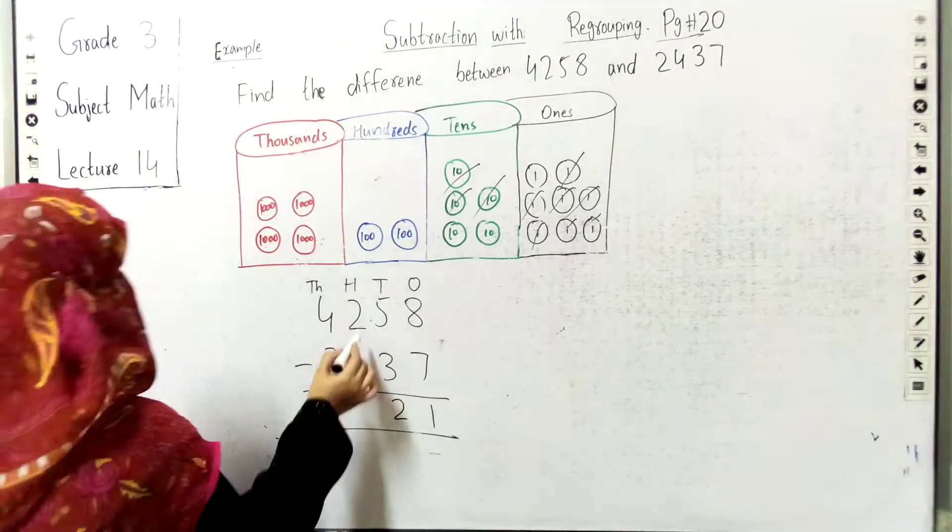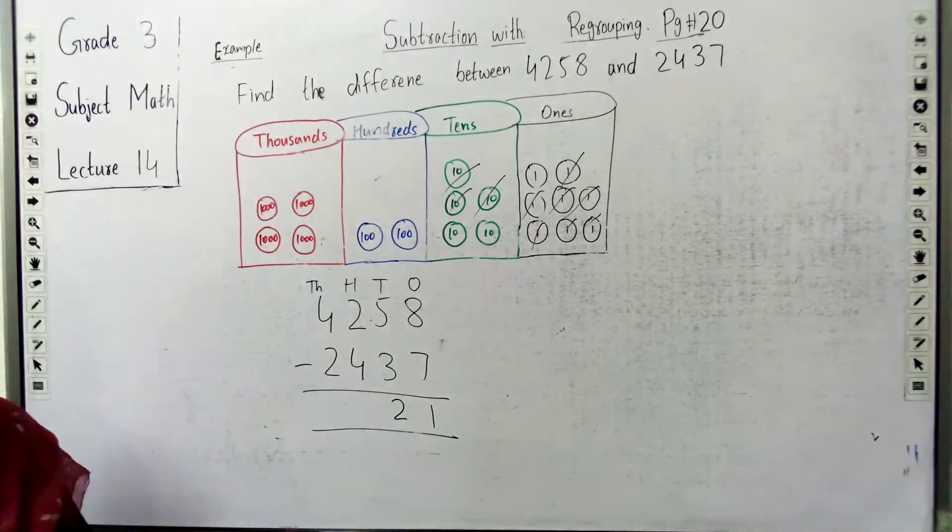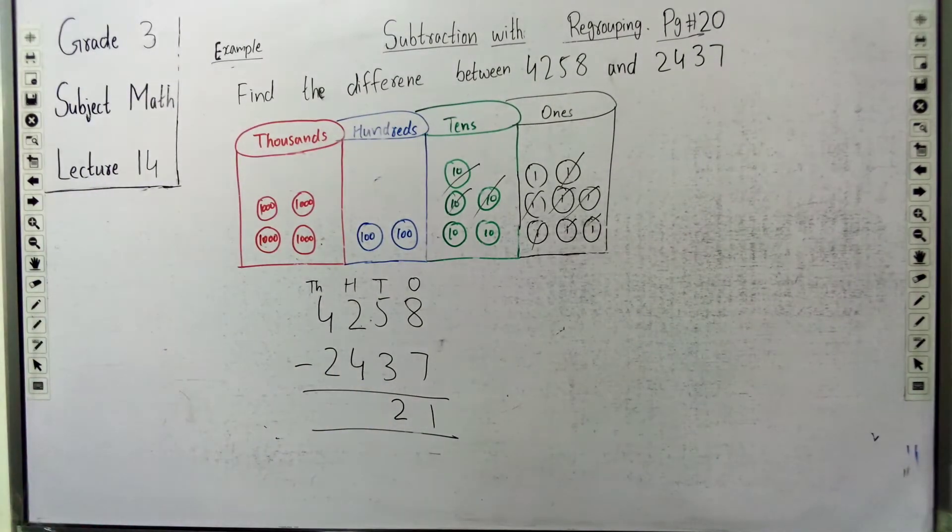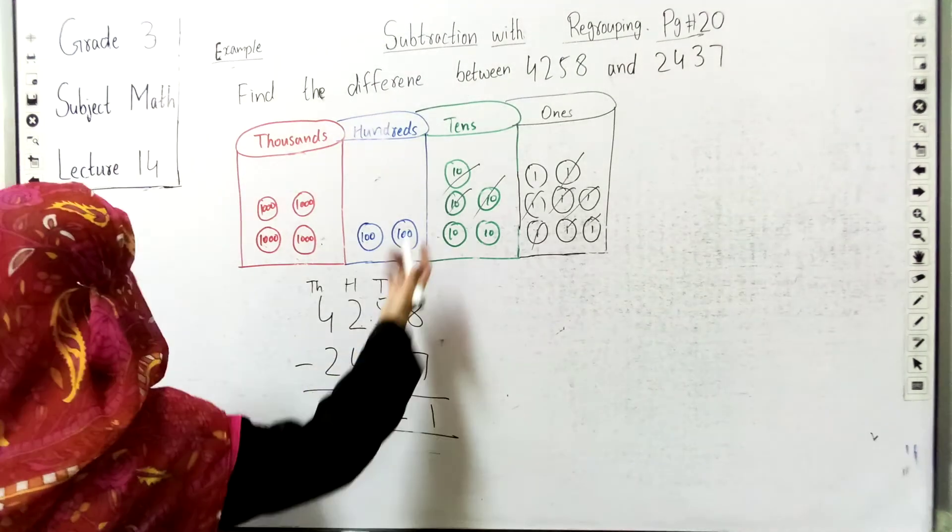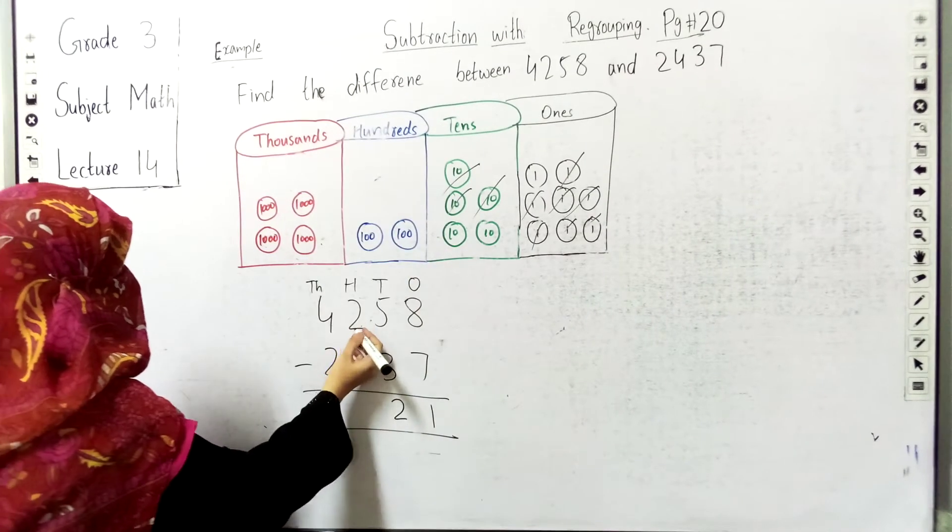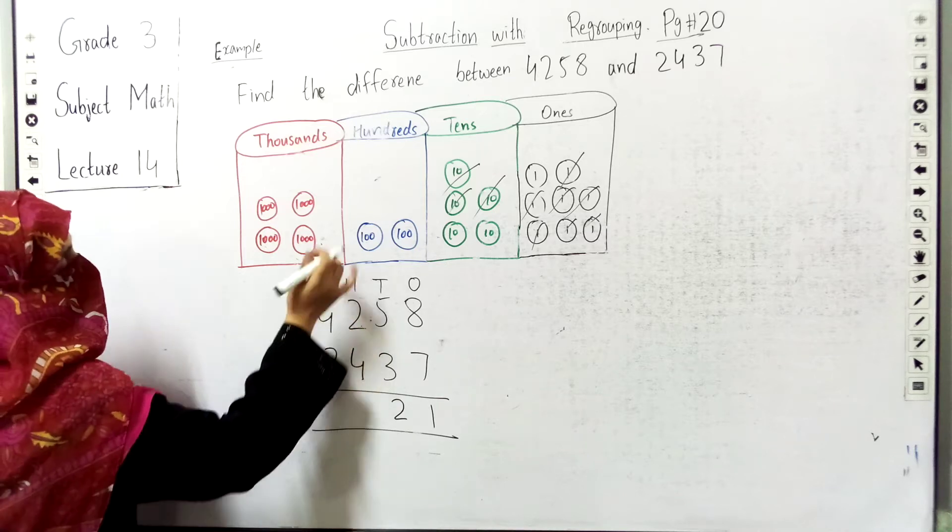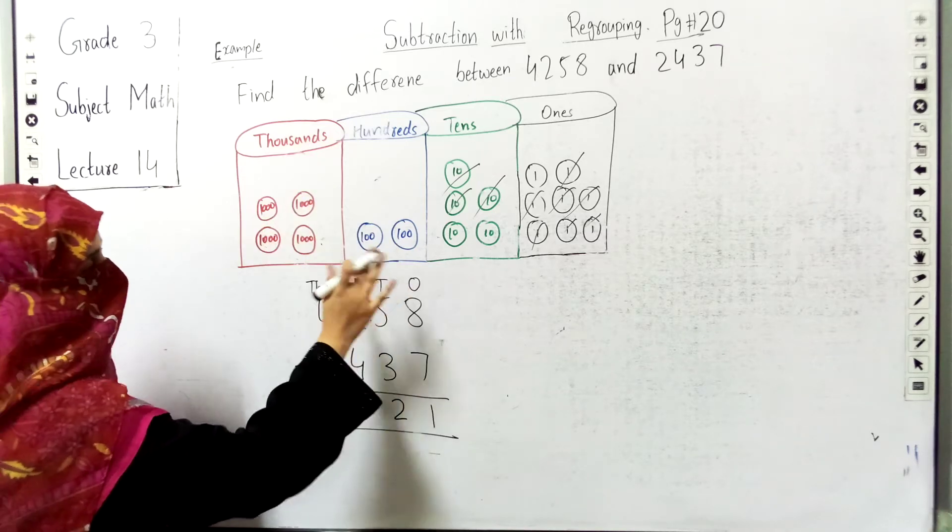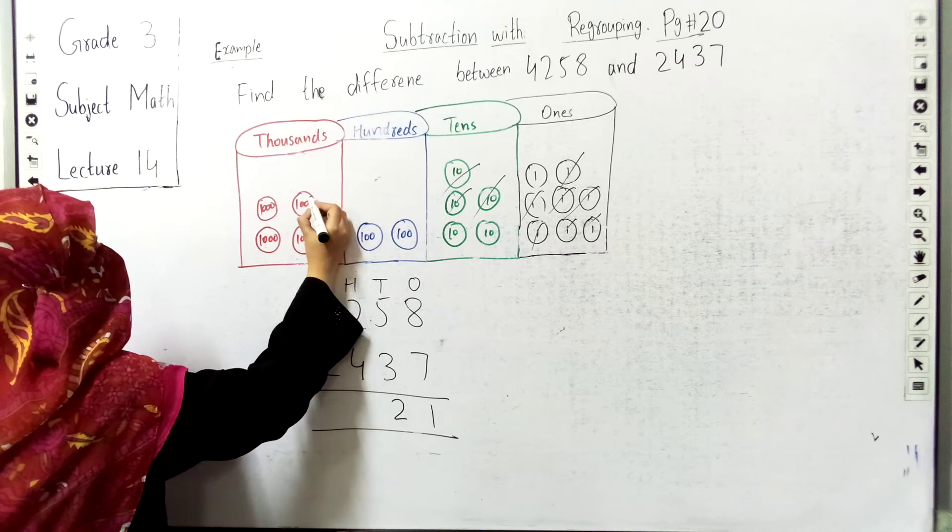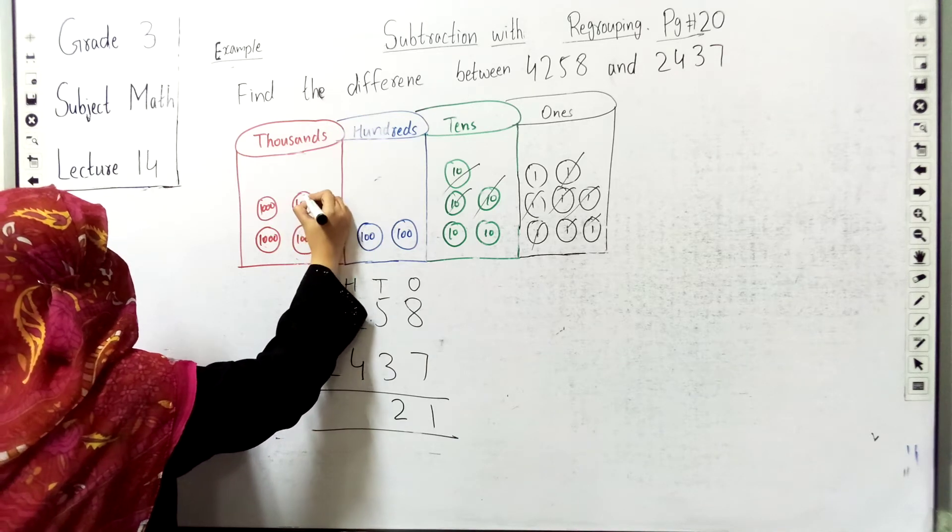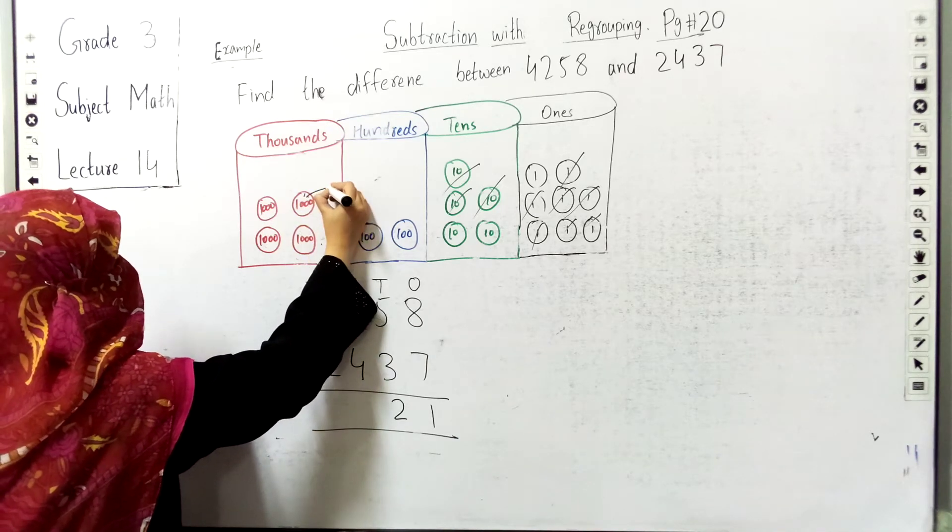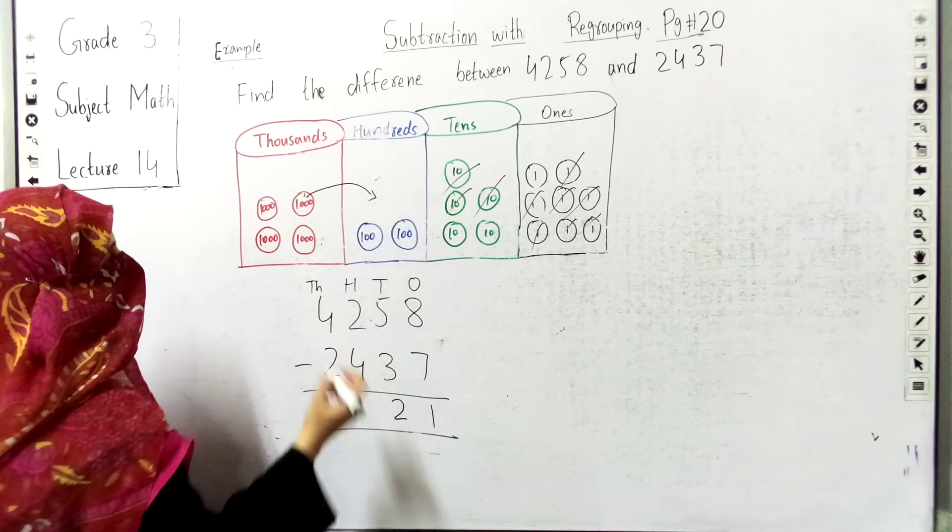So 2 is smaller and 4 is greater. We cannot do 2 minus 4. We have to regroup. We have 4 blocks of 1000, so we will use 1 block from there.